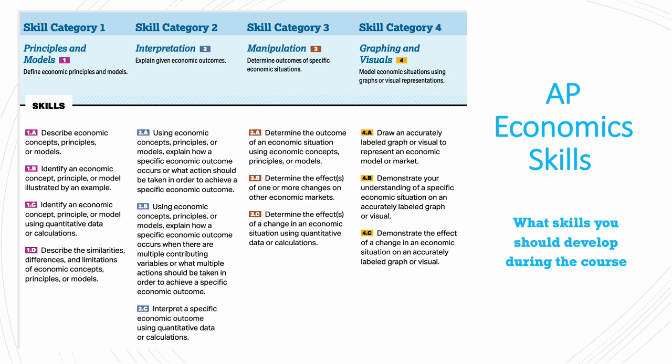The fourth skill category, which is very important, is graphing and visuals — to model economic situations using graphs or visual representations. This entails drawing an accurately labeled graph or visual to represent an economic model or market, demonstrating your understanding of a specific economic situation using an accurately labeled graph or visual, and demonstrating the effect of a change in an economic situation on an accurately labeled graph or visual.